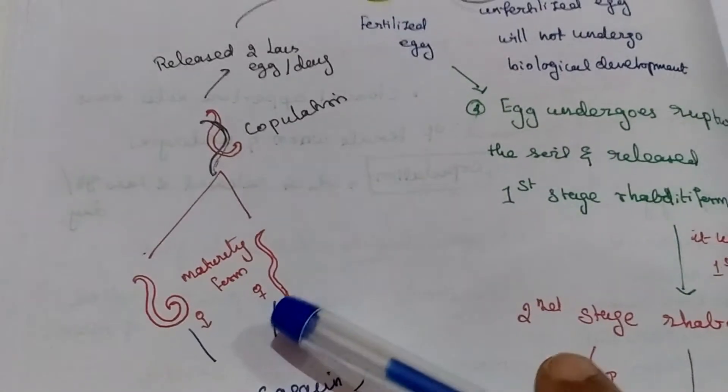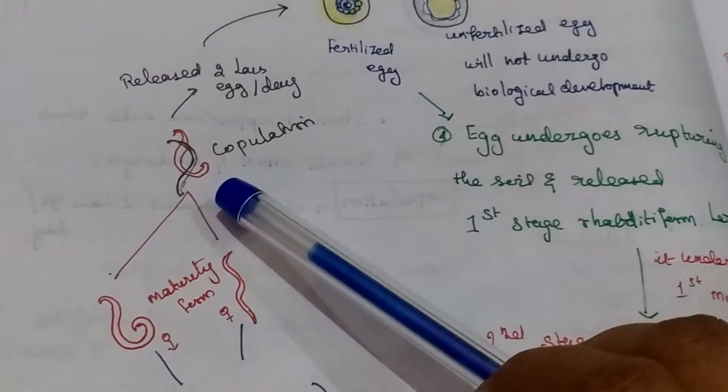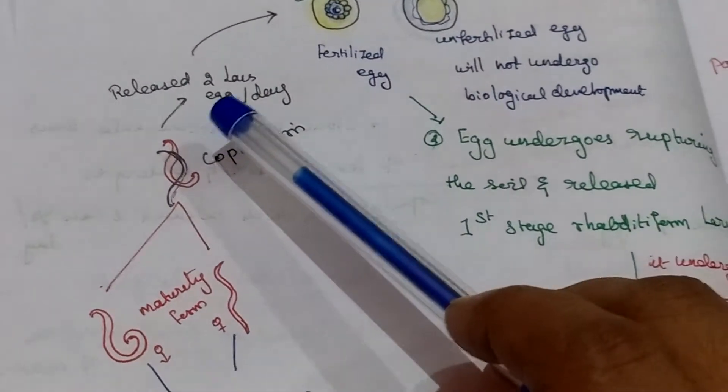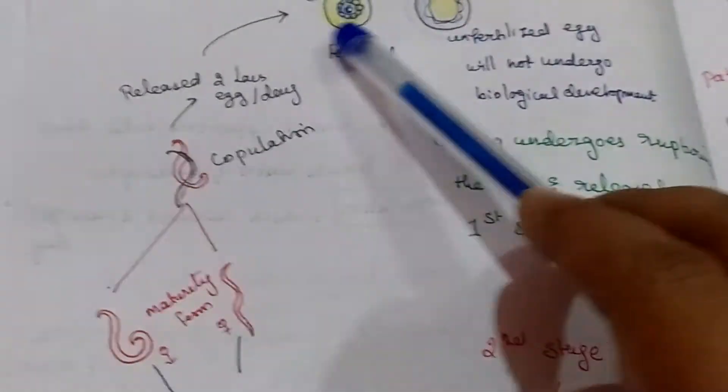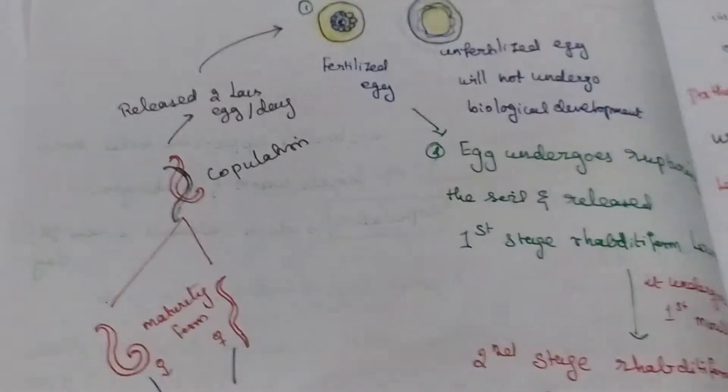Again it reaches the intestine. Here male and female worms are there, copulation occurs. It releases 2 lakh eggs per day. Then it is a cyclic process, it continues again.